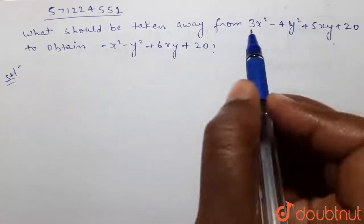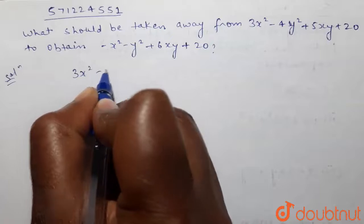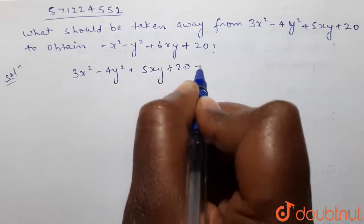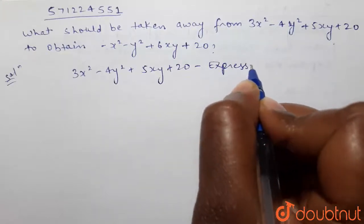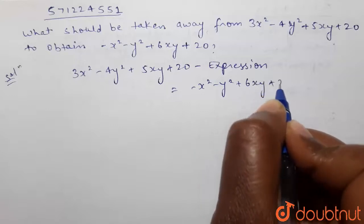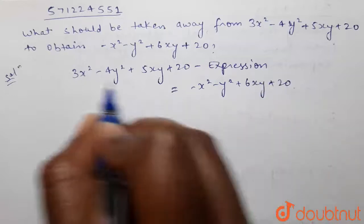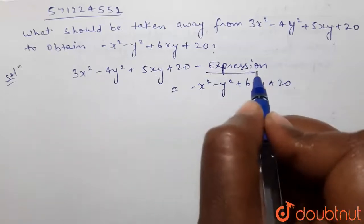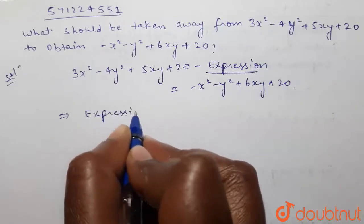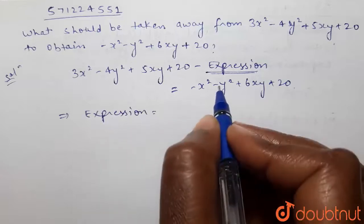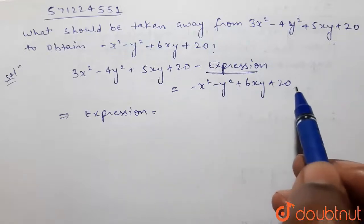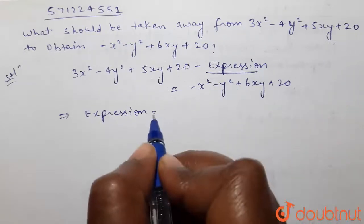We have to subtract an expression from 3x² minus 4y² plus 5xy plus 20, and when we subtract our expression from this one, we should get minus x² minus y² plus 6xy plus 20. So we have to find the value of this expression. The expression will be equal to — we will take this term to the left-hand side and the expression to the right-hand side.